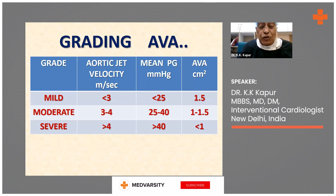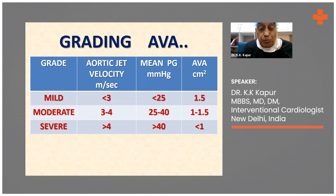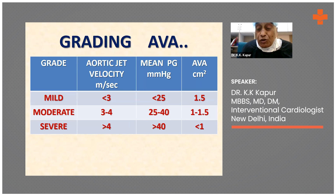You grade the severity of aortic stenosis as mild, moderate, or severe depending upon the peak velocity of the jet across the aortic valve, the mean pressure gradient, and the aortic valve area. If the peak velocity across the aortic valve is less than 3 meters per second, the mean pressure gradient is less than 25, and the aortic valve area is 1.5 centimeters squared or more, then that is mild aortic stenosis.